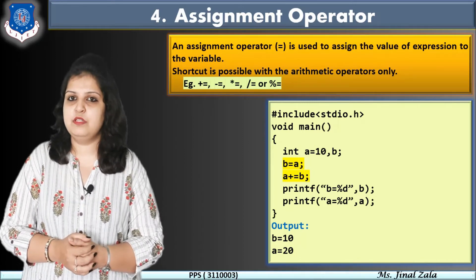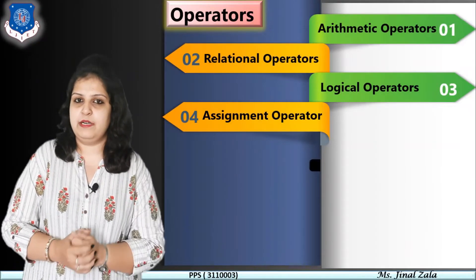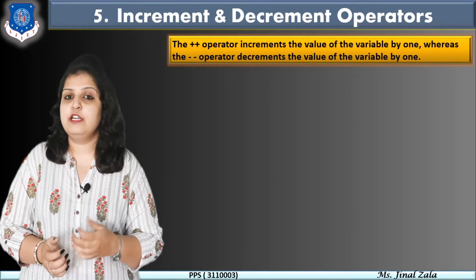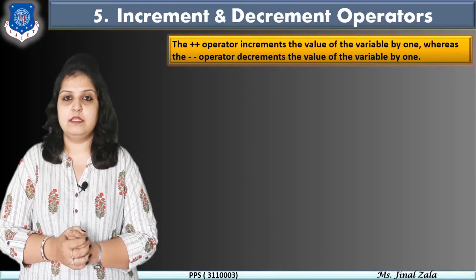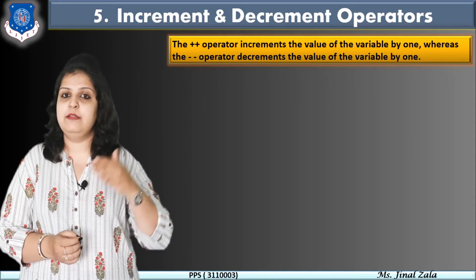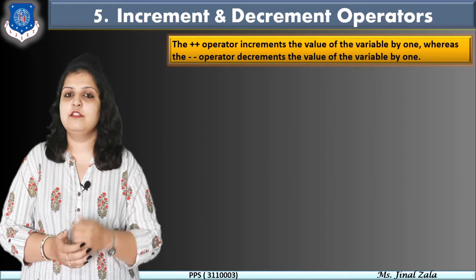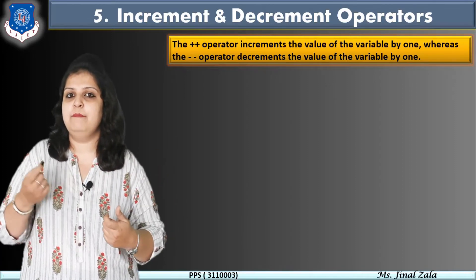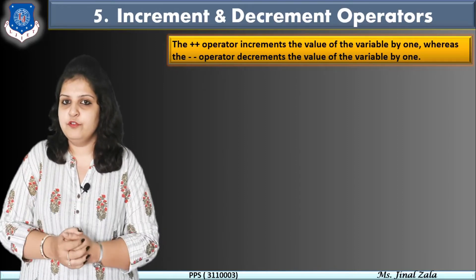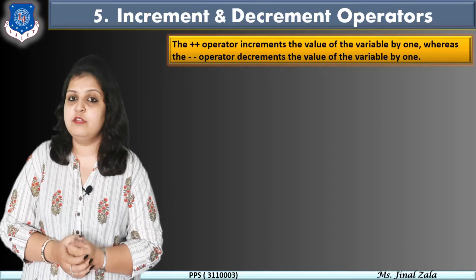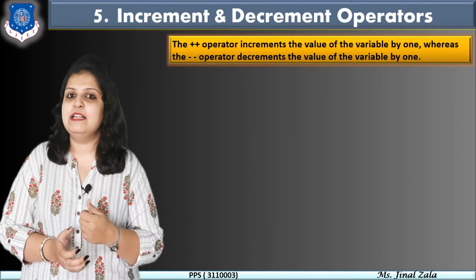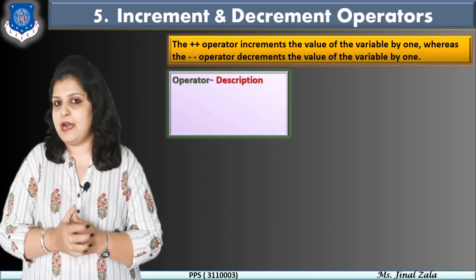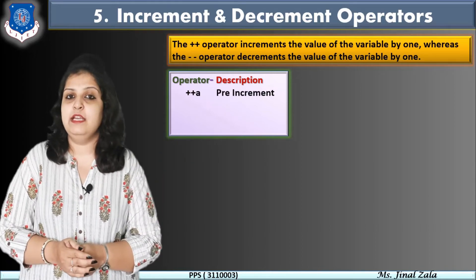In this way we can use assignment operators. Moving to the next operator: increment and decrement operators. Increment means the value increases by 1 and decrement means the value decreases by 1. For example, A = A + 1 can be done using ++ for increment and -- for decrement. Increment and decrement are divided into two types.